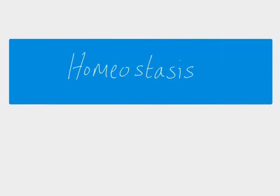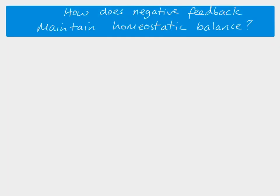In this video we're looking at homeostasis, particularly in relation to temperature control. Homeostasis is the way that our internal environment is maintained at a constant level — that maintenance of a constant internal environment — so that cells in the body are able to function effectively. Negative feedback is a mechanism that helps to maintain homeostatic balance and keep these factors within narrow limits.